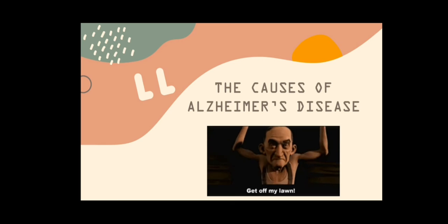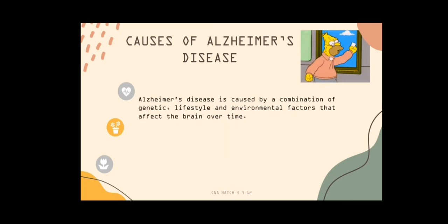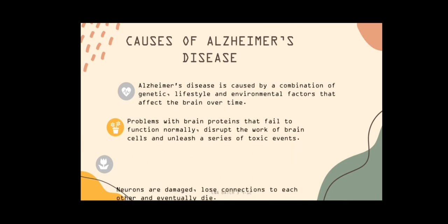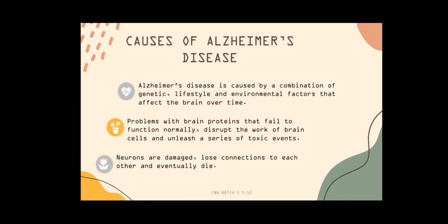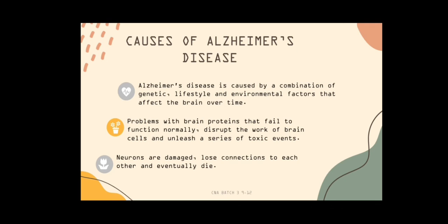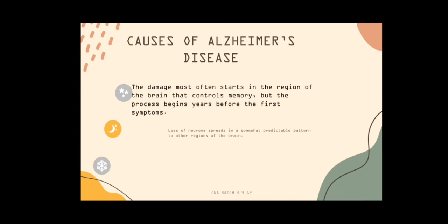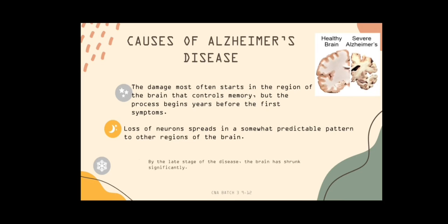The causes of Alzheimer's disease. Alzheimer's disease is caused by a combination of genetic, lifestyle, and environmental factors that affect the brain over time. Problems with brain proteins that fail to function normally disrupt the work of brain cells and unleash a series of toxic events. Neurons are damaged, lose connection to each other, and eventually die. The damage most often starts in the region of the brain that controls memory, but the process begins years before the first symptoms. Loss of neurons spreads in a somewhat predictable pattern to other regions of the brain, and by the late stage of the disease, the brain has shrunk significantly.